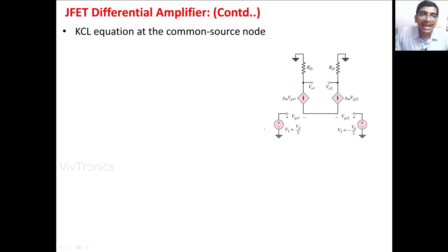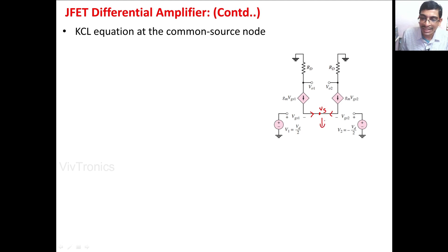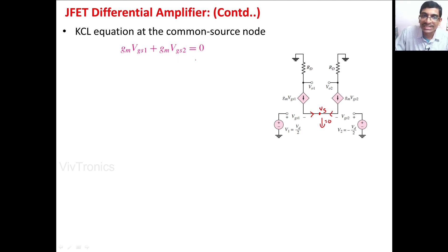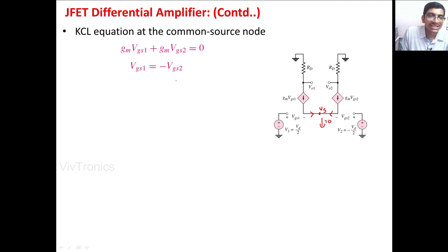If we apply KCL at the common source node Vs, the two incoming currents are GmVGS1 and GmVGS2, and there is no outgoing current. Therefore, we can represent it as GmVGS1 + GmVGS2 = 0. From this equation, we can write GmVGS1 = -GmVGS2.